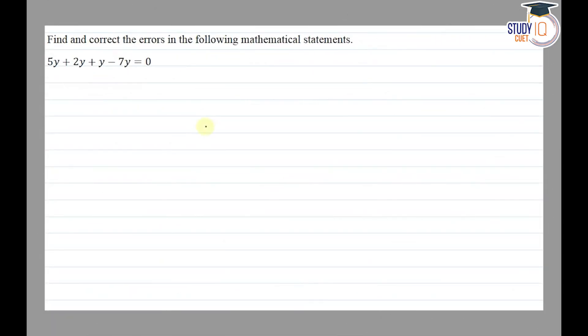Hello everyone. This question appears in Class 8 NCERT chapter of Factorization. This is the fifth question of Exercise 14.4. The question says: find and correct the errors in the following mathematical statement — 5y + 2y + y − 7y = 0.